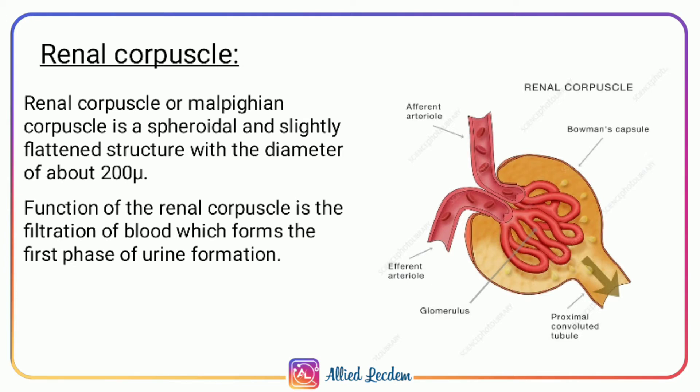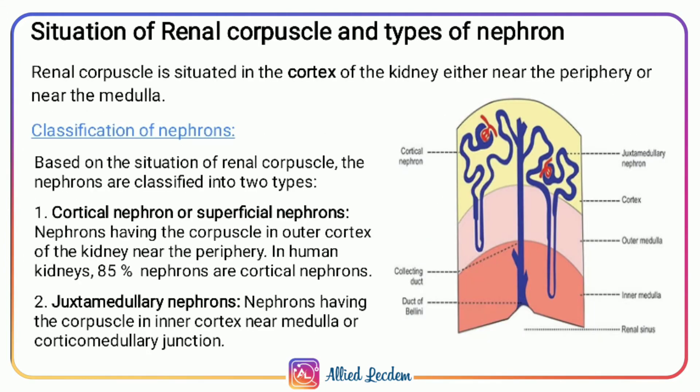The renal corpuscle, also called the Malpighian corpuscle, is a spheroidal or slightly flattened structure with a diameter of about 200 micrometers. Now let's see where the renal corpuscle is situated and also the classification of the nephron.